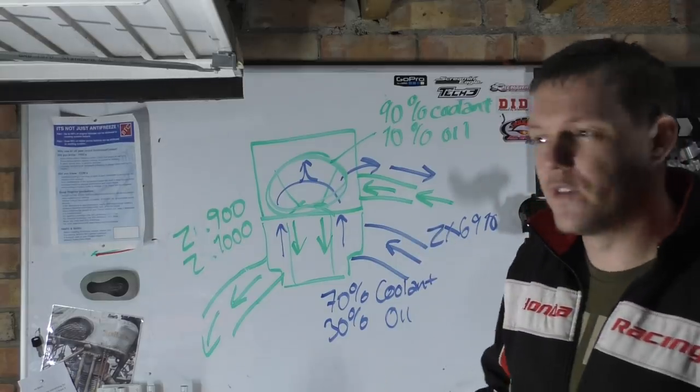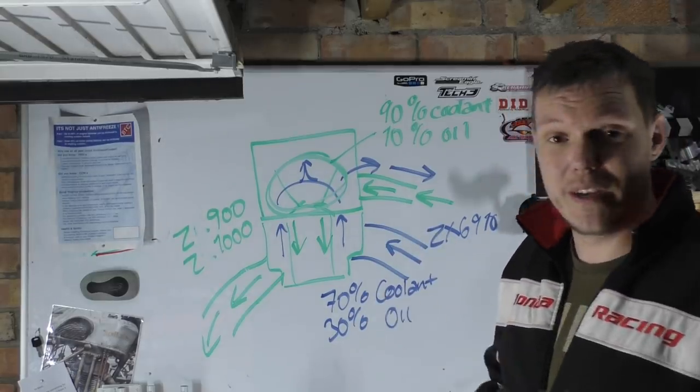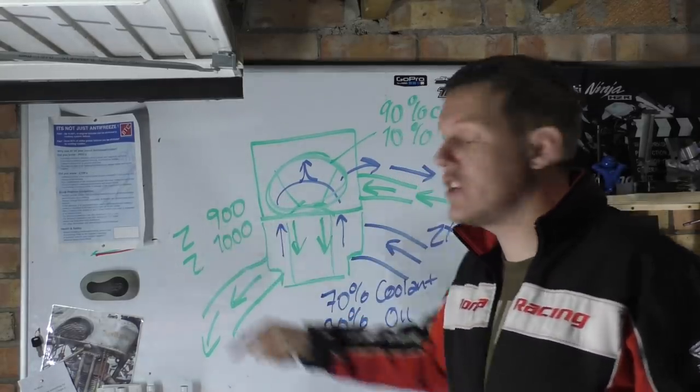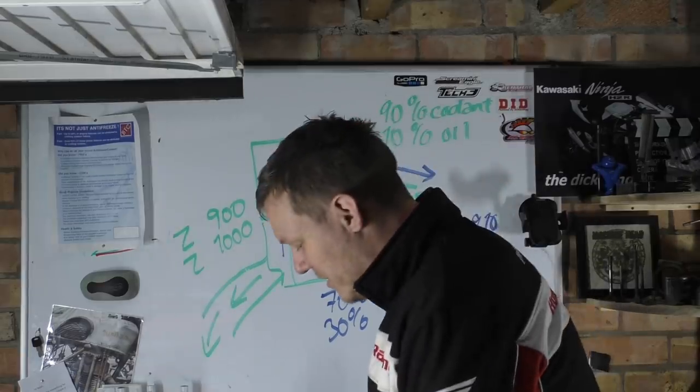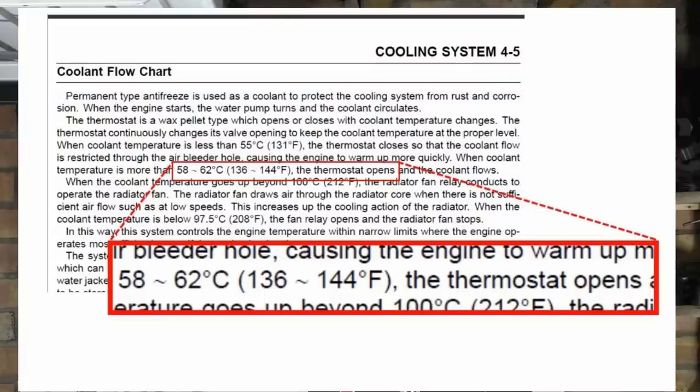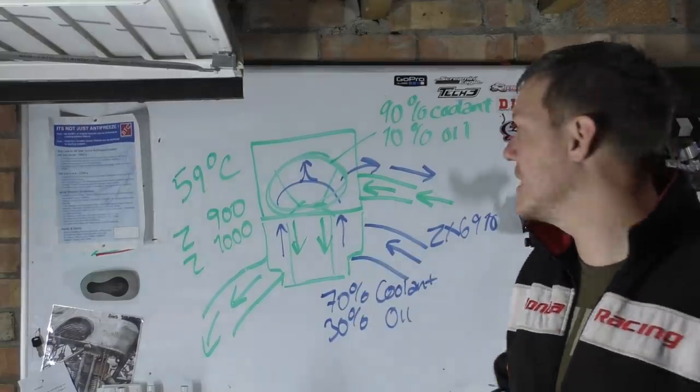It's just quite an interesting thing that they've done that. The other weird thing I found out was the thermostat range. The thermostat for the Z900 opens at 59 degrees, 59 degrees C. Again this is to get the coolant in there quick and try and stop this thing from overheating.